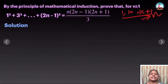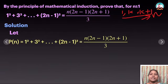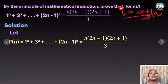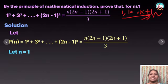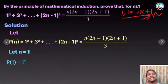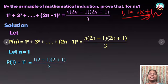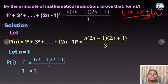For the solution, let the given equation be P(n). P(n) is equal to the given expression. Now, at n equal to 1, I am going to substitute n=1 in this equation. P(1) on the left-hand side gives the first term alone, which is 1². On the right-hand side, substituting n=1, I get 1 equal to 1. So LHS equals 1 and RHS equals 1. Therefore I can conclude that P(1) is true.